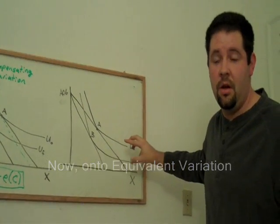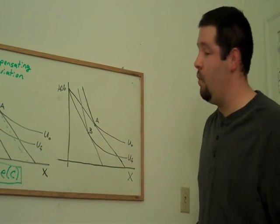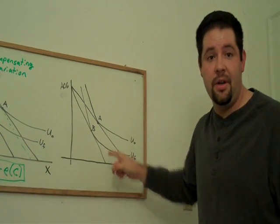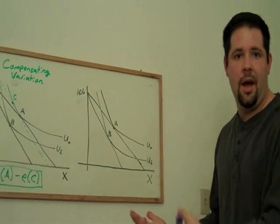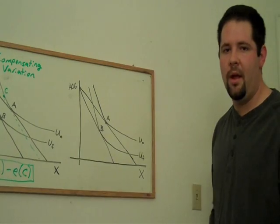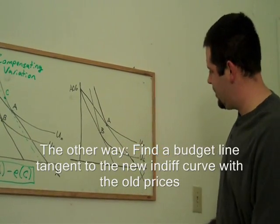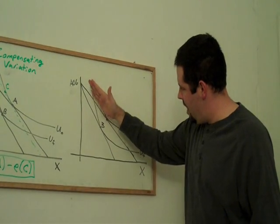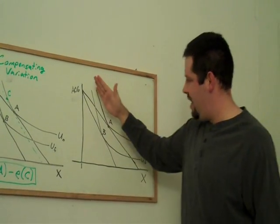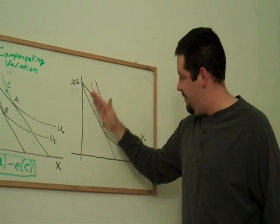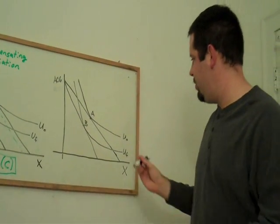Well, notice we have two indifference curves here. Another way to compute the welfare change is we can just go to this other indifference curve and do the decomposition just the other way. We go to the final utility and we ask ourselves how much money would this person be willing to give up to avoid the price change.